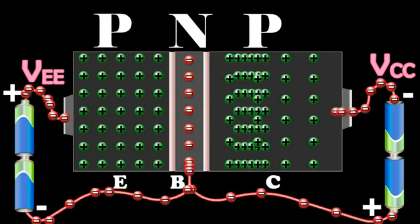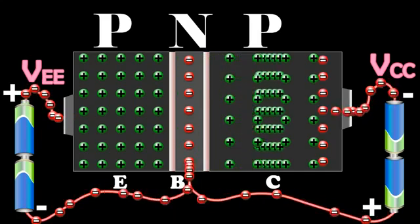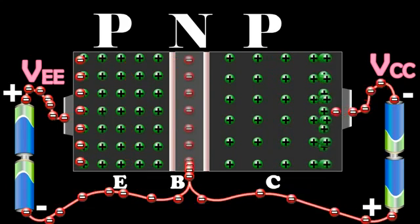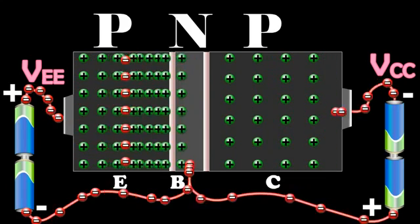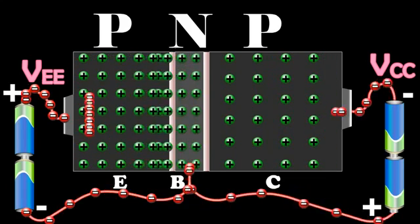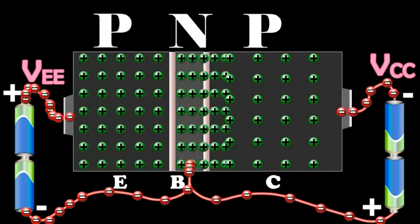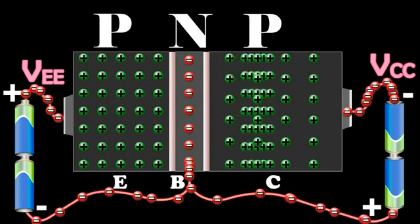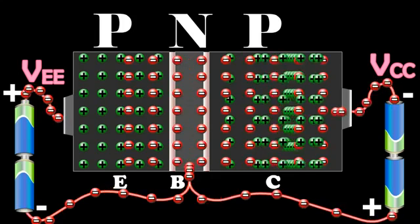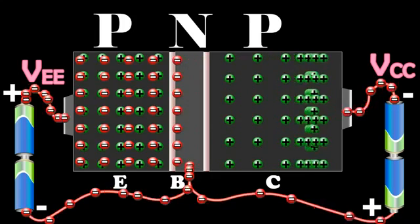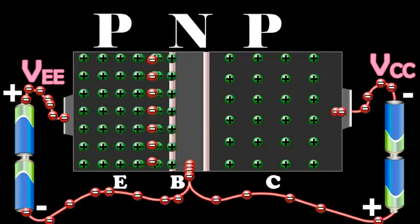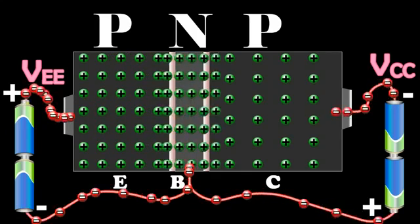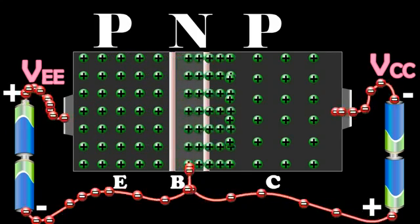The flow of holes from the emitter to the base gives rise to emitter current IE. In the emitter, IE is due to the flow of holes, but in the external circuit the current is due to the flow of electrons from the emitter to the positive terminal of the battery VEE.